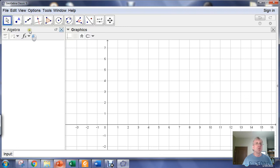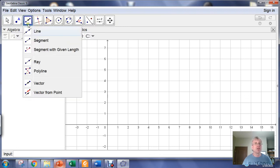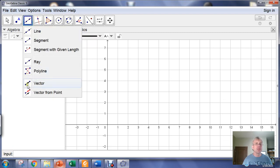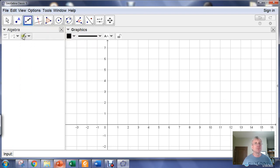Suppose you wanted to make a vector. You could go in where the default line tool is and in here there is a vector option. You can create a vector just by drawing it. You click on the tool and you can construct a vector just by clicking a couple points on the screen.